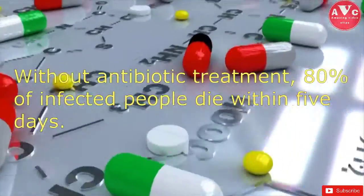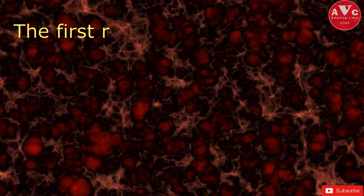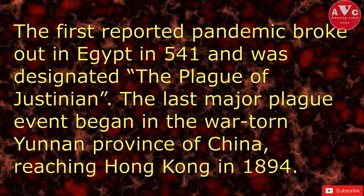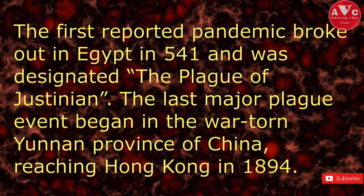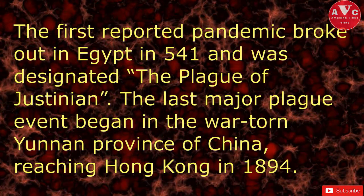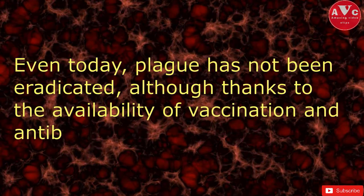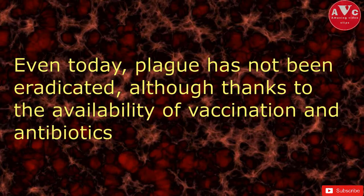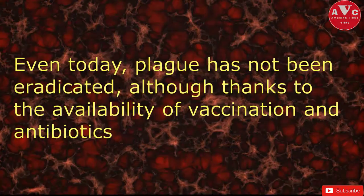Without prompt antibiotic treatment, 80% of infected people die within five days. In the United States alone, 1,040 confirmed or probable cases of plague occurred between 1900 and 2016, 80% of which were classified as the bubonic form. In recent years, incidence has ranged from 1 to 17 cases per year, with most occurring in the rural West.